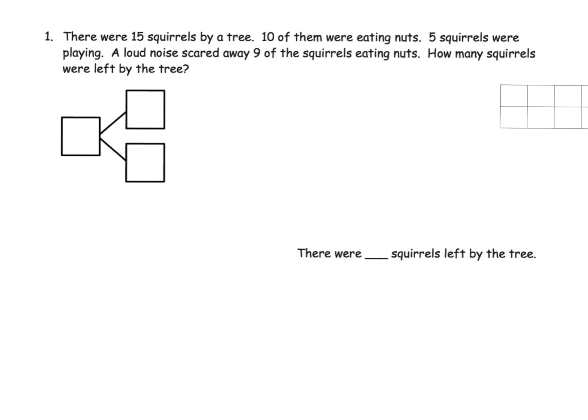The problem says there were 15 squirrels by a tree, 10 of them were eating nuts, 5 squirrels were playing, a loud noise scared away 9 of the squirrels eating nuts — how many squirrels were left by the tree? For parents and teachers, this is going to be very different from the way we grew up learning mathematics. We're going to set up this problem using a number bond, with 10 and 5 equaling 15 — classic part-part-whole.